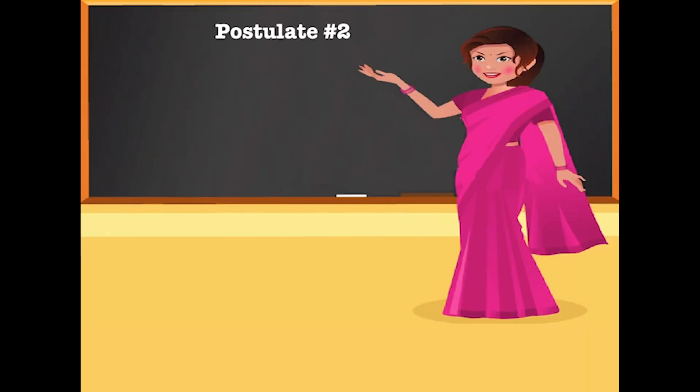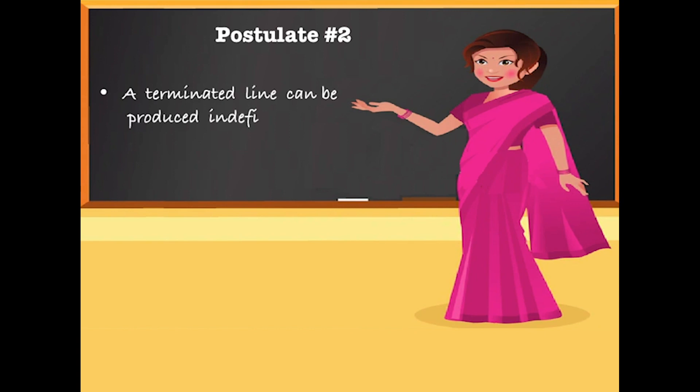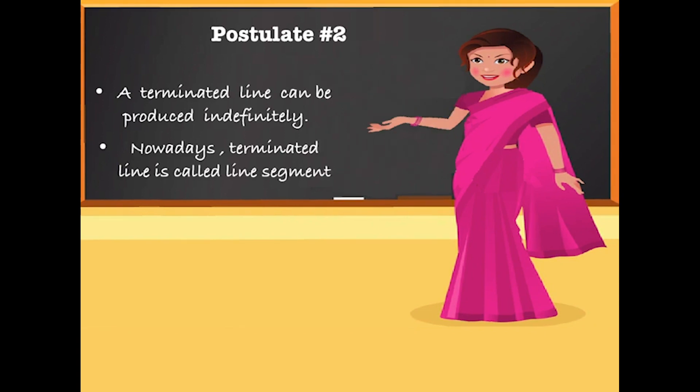Now what is postulate 2? A terminated line can be produced indefinitely. Nowadays, terminated line is called line segment. So what does the definition of a line segment say? It states that a line segment is basically part of a line between two end points.